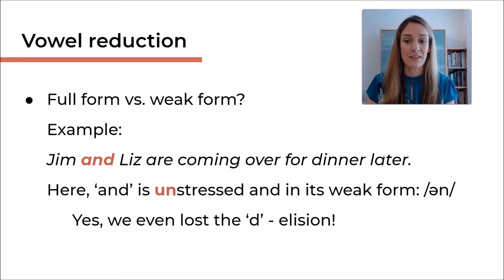So Jim and Liz—AND becomes AN. And yes, we even lost the D at the end. That is called elision. If you'd like to find out more about elision, check out my video on assimilation, elision and intrusion. I will link to it in this video.